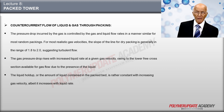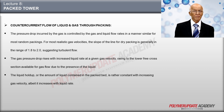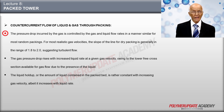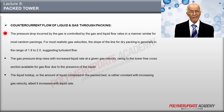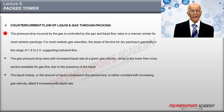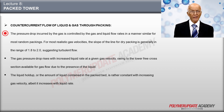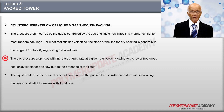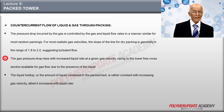For countercurrent flow of liquid and gas through packings: for most random packings, the pressure drop suffered by the gas is influenced by both gas and liquid flow rates. The slope of the line for dry packing is usually in the range of 1.8 to 2, indicating turbulent flow for most practical gas velocities. At a fixed gas velocity, the gas pressure drop increases with increased liquid rate.